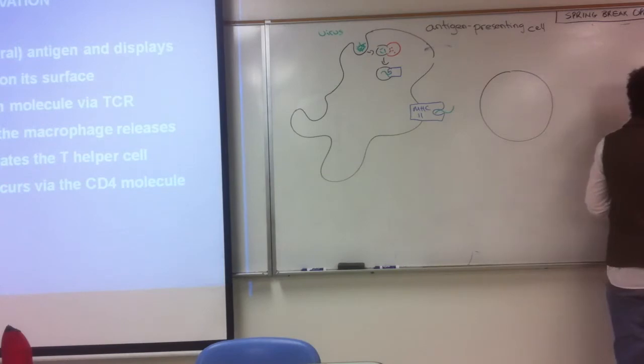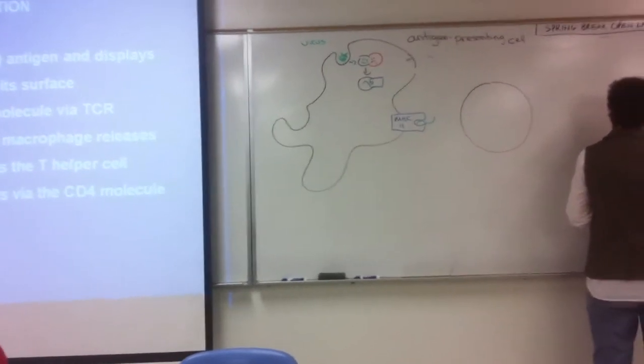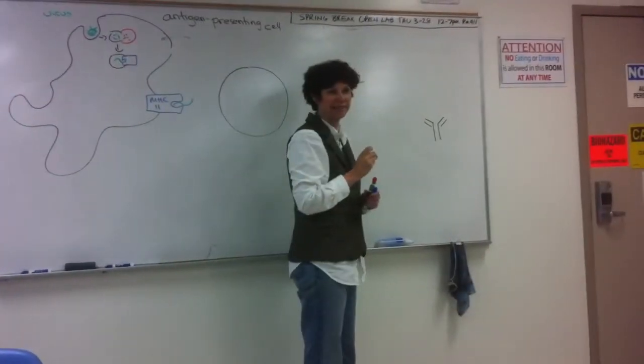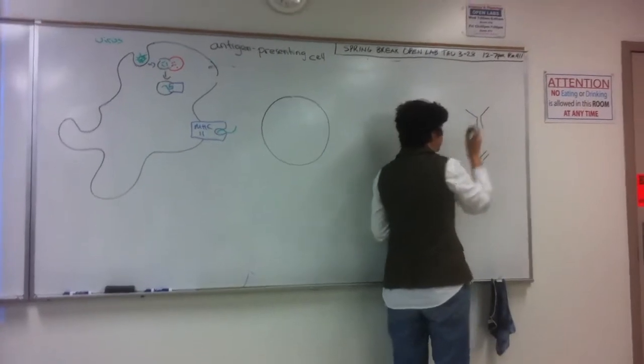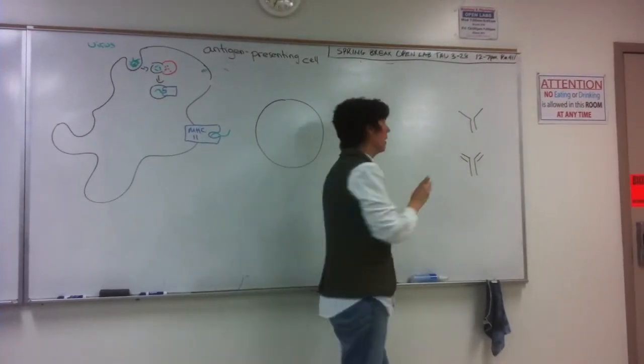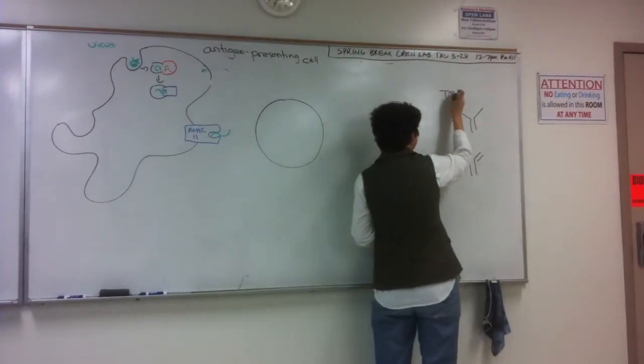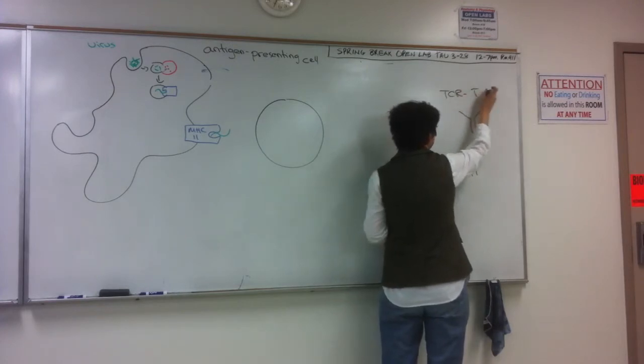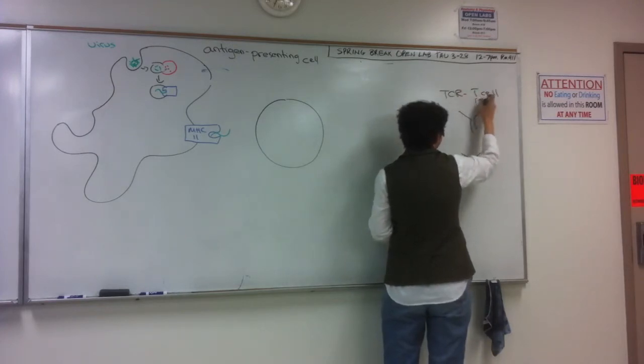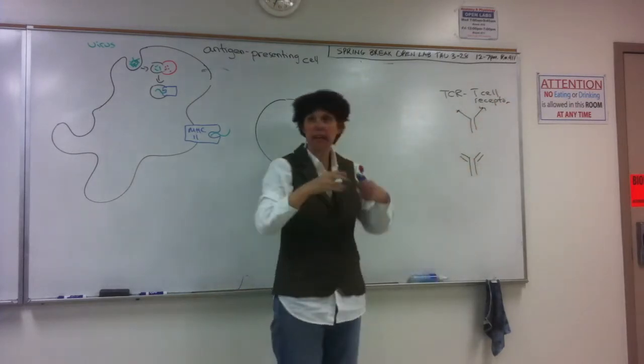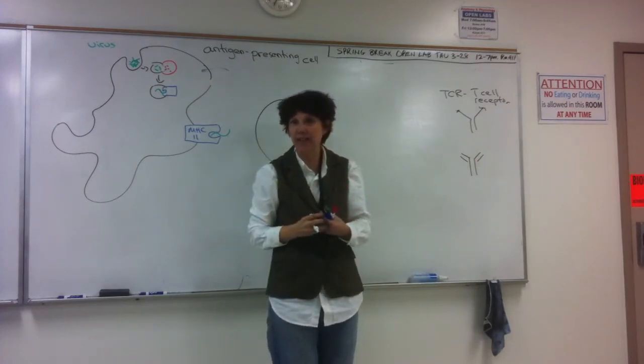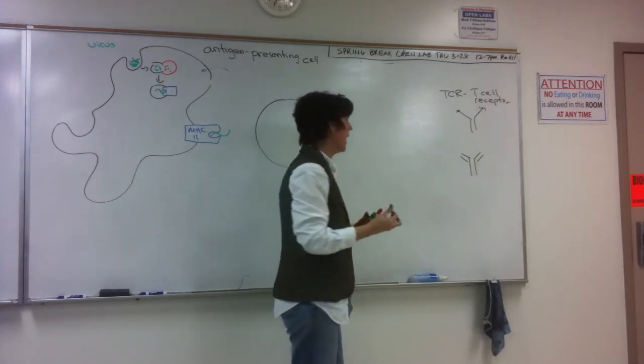So, an antibody is formed of, we'll look at this tomorrow, is formed of two long chains and two short chains. The T-cell receptor looks similar to that, but it's just two long chains. So, this is identified as a TCR or T-cell receptor. Like an antibody, these ends are specific, they're what's going to recognize the antigen, or the epitope of the antigen.